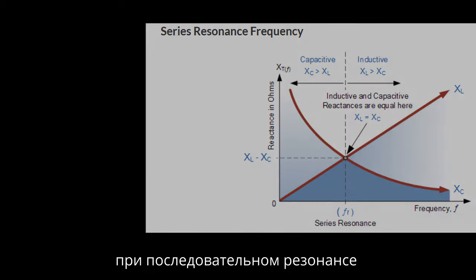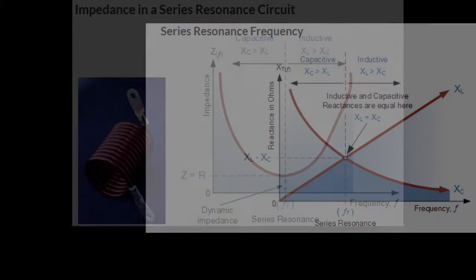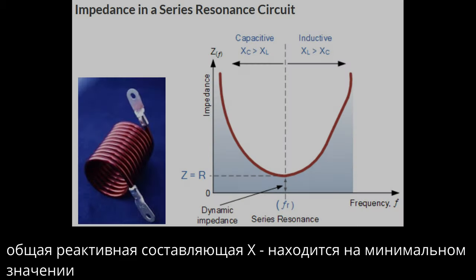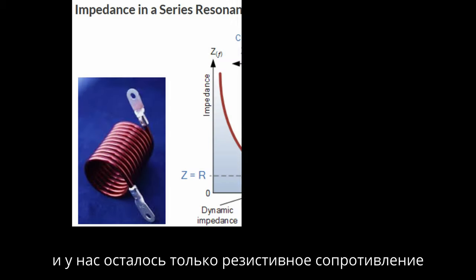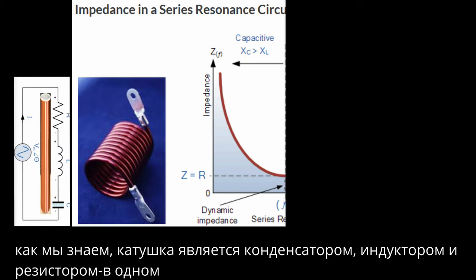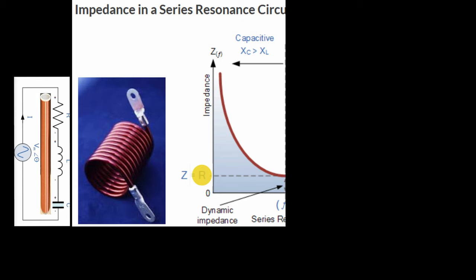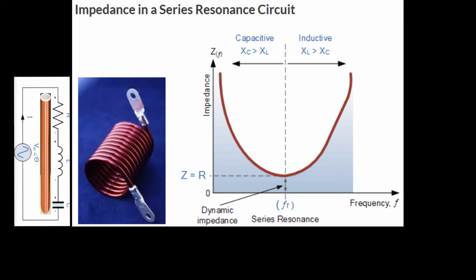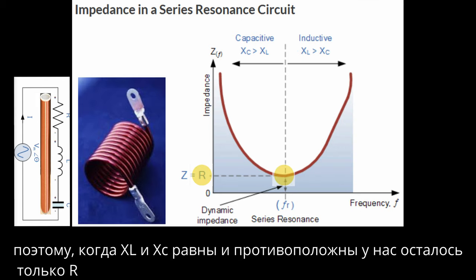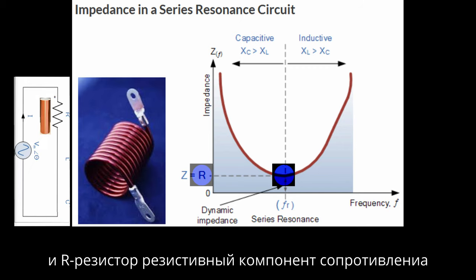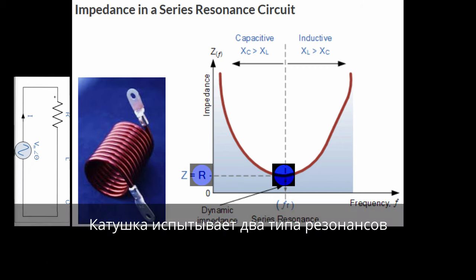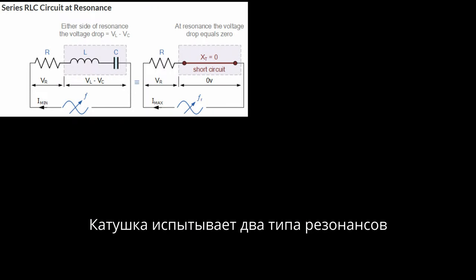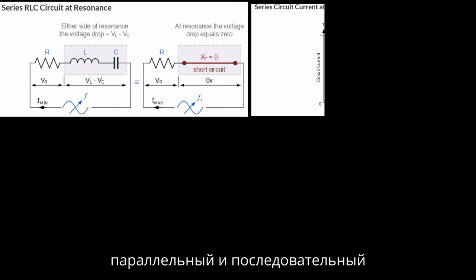At resonance, the impedance of the series circuit is at its minimum value and equals only the resistance R of the circuit. Since a coil is three-in-one — resistor, capacitor, and inductor — when inductor and capacitor reactances cancel to zero, we have only R, the resistance of the coil. A coil experiences two types of resonances: parallel and series. In series resonance, current is maximum and voltage is minimum; in parallel, current is minimum and voltage is maximum.